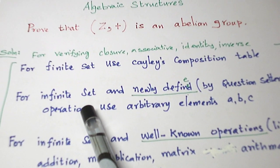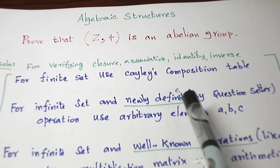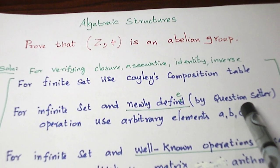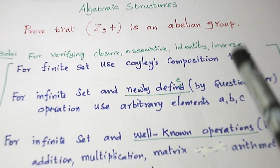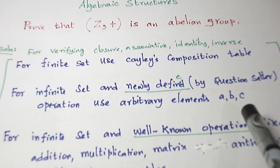If it is an infinite set and the operation is defined by the question setter, then we have to use arbitrary elements to verify the above properties, A, B, C like that.